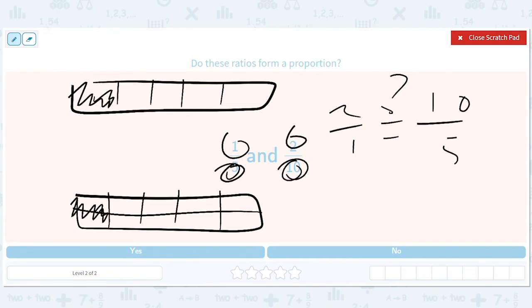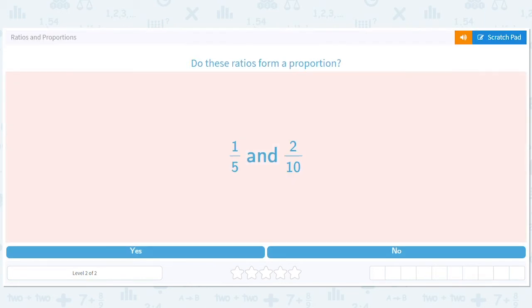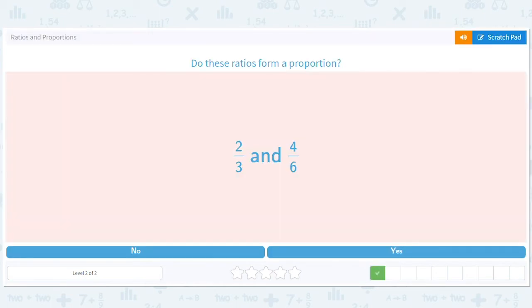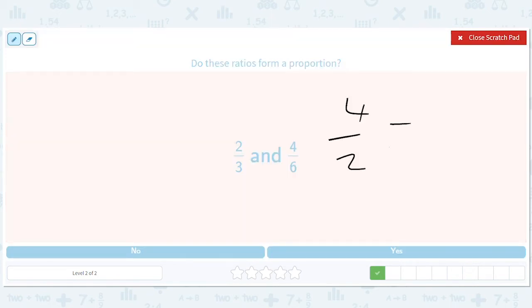So in this case, you have two over one is two. Ten over five is two. So yes. Okay, so over here, we can do four divided by two. Does it equal six divided by three?